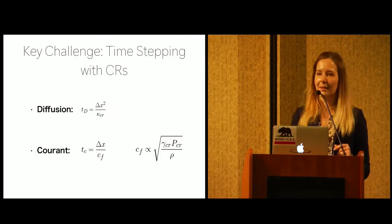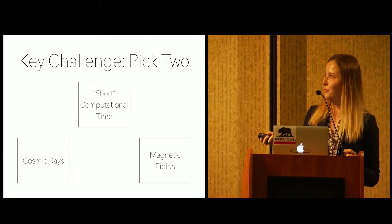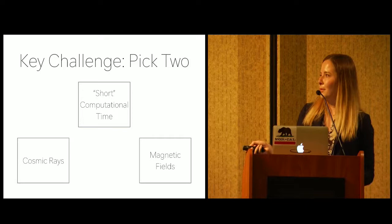And it may very well be that that's just the limitation of the code. So the key challenge can be summarized into saying pick two from reasonable computational time, cosmic rays, or magnetic fields, and in order to do anisotropic cosmic ray movement, you need the bottom two.